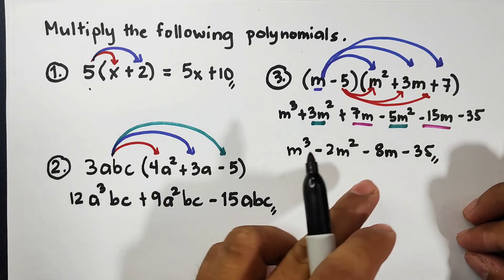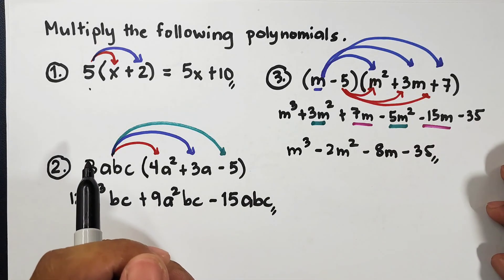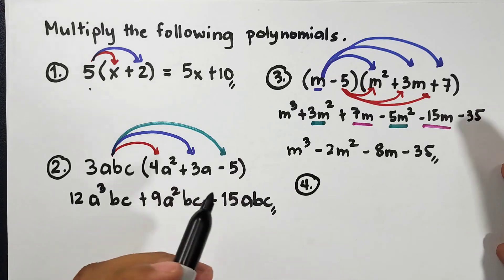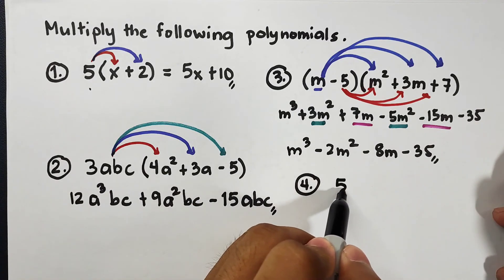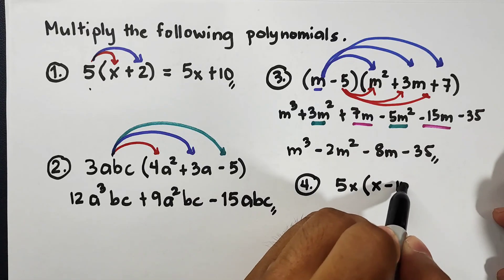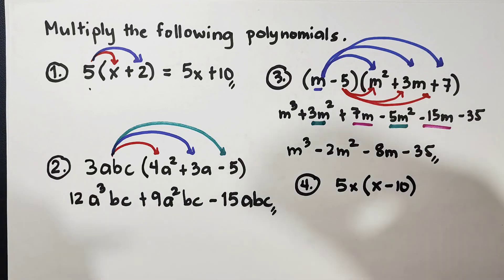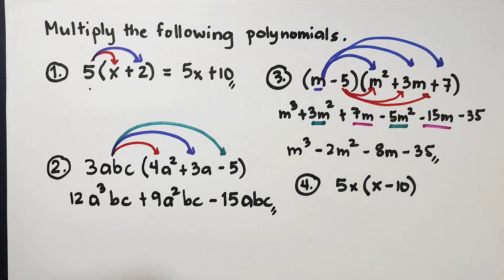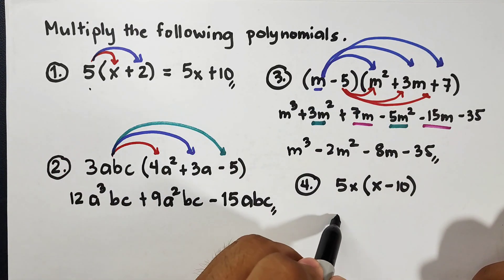For your assignment, let's try having 5x times x minus 10. I hope to see your answer in the comment section. I hope you learned from our video on how to use the distributive property. If you're new to my channel, don't forget to like and subscribe, and hit the bell button to be updated on our latest uploads. Again, it's me Teacher Going. Thank you very much. Bye.